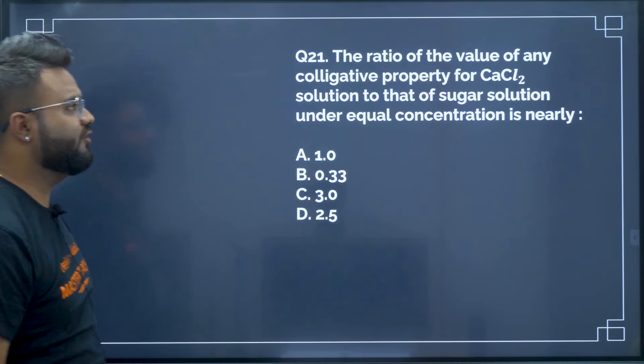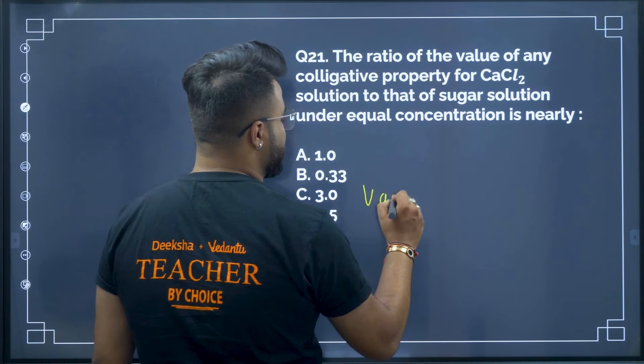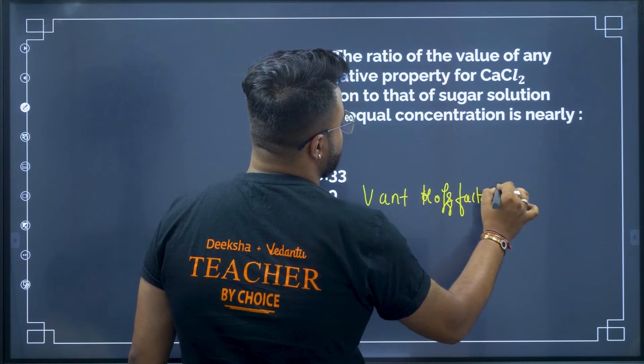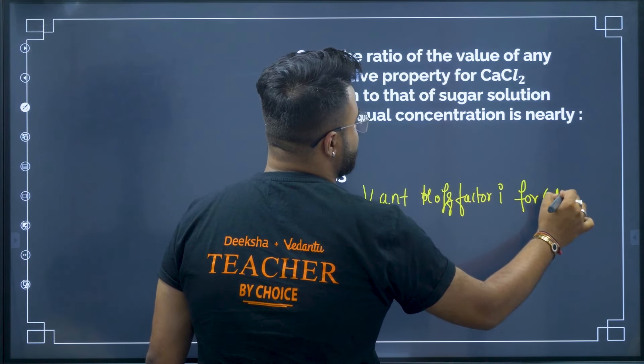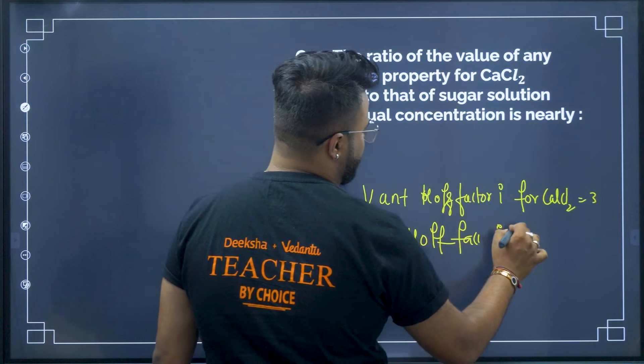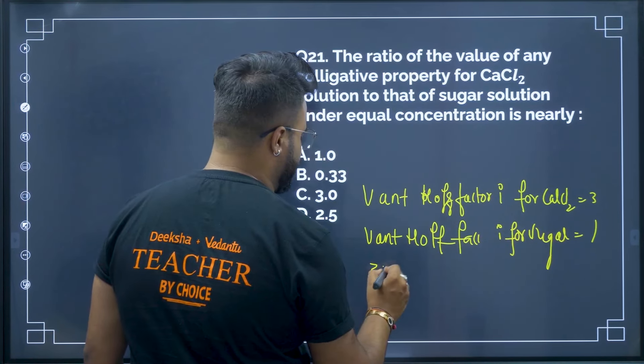Question 21: The ratio of colligative property of calcium chloride solution to sugar solution. Van't Hoff factor i for CaCl₂ = 3 (Ca²⁺ + 2Cl⁻), and for sugar = 1. Therefore the ratio is 3:1 = 3.0. Correct option is C.